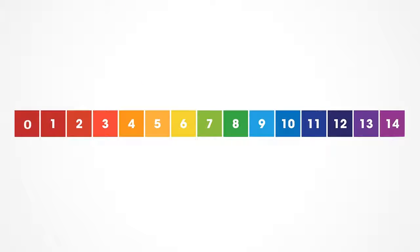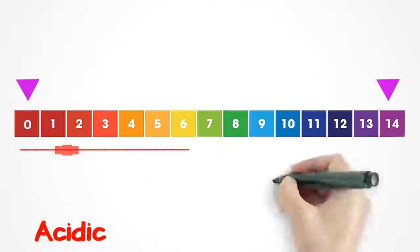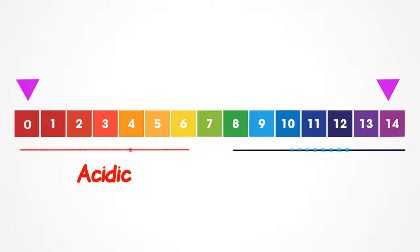The pH scale ranges from 0 on the left to 14 on the right. Everything between 0 and 7 is classified as an acid or is acidic. Everything on the right between 7 and 14 is a base or alkaline.